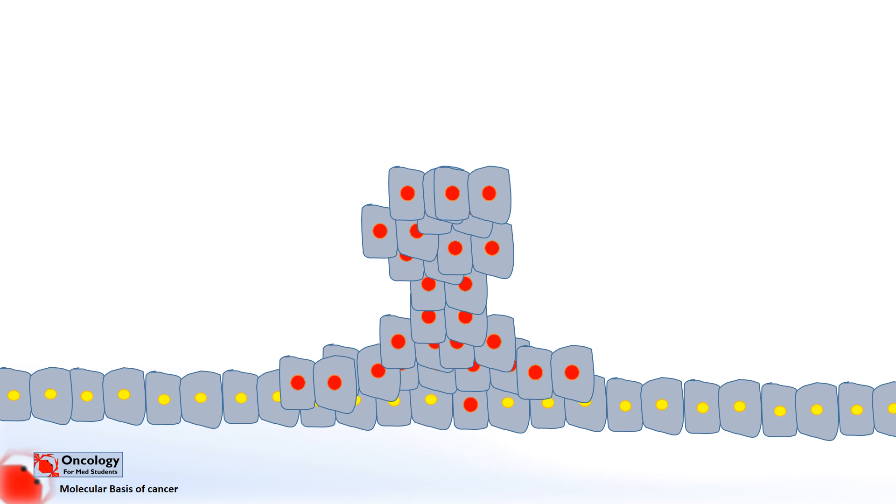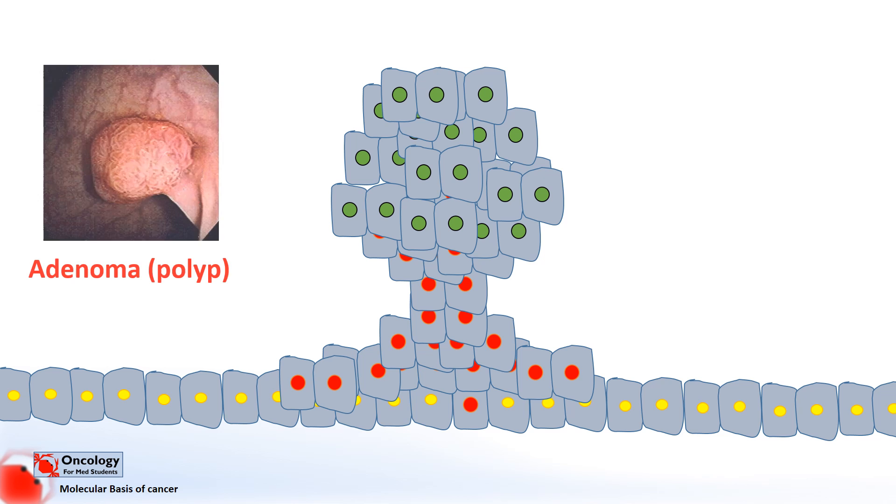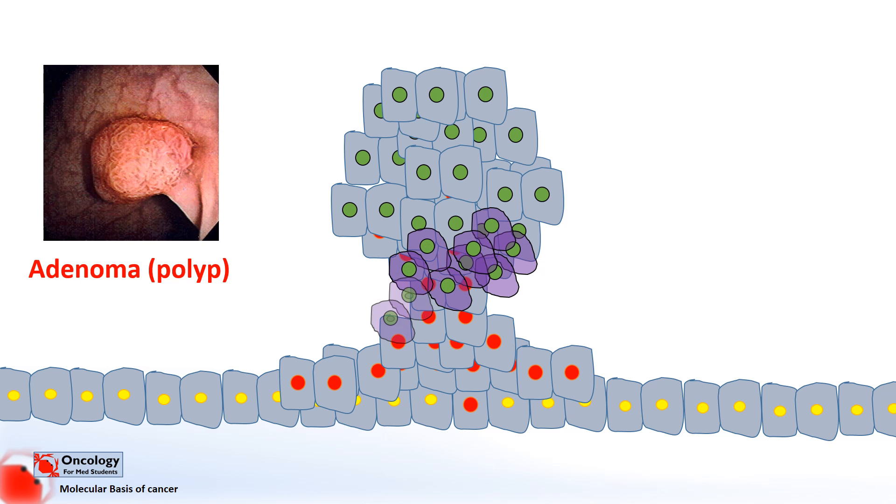At this stage the tumors are still benign but as cells within the polyp gain further mutations and out-compete their surrounding cells, they eventually gain mutations that allow it to grow outward into the tissues of the colon. This is the point at which it's considered cancerous.